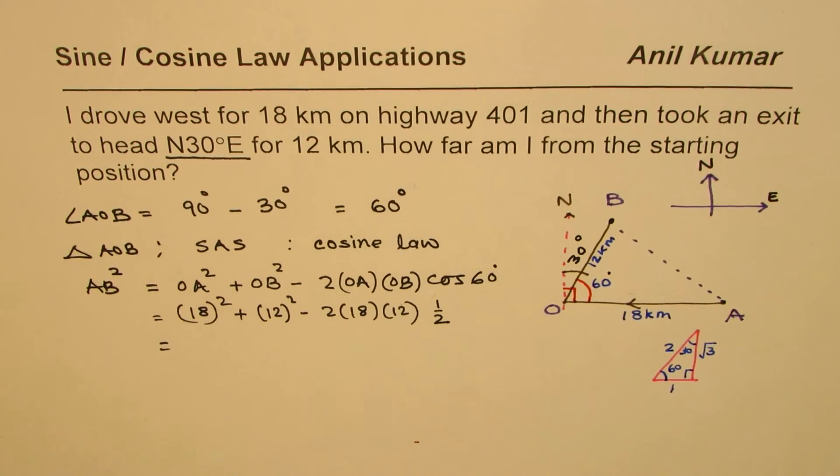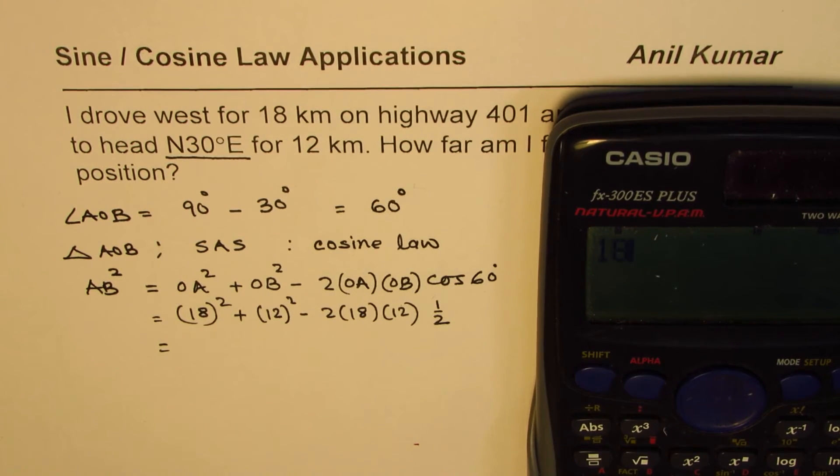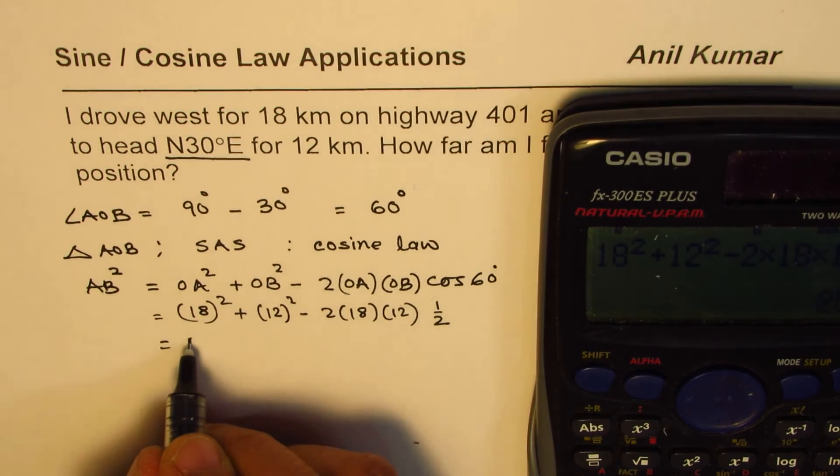Now we can use calculator to find the answer. So it is 18² plus 12² minus 2 times 18 times 12 times, when you're using calculator why not punch in cos 60 itself. So instead of half I punched in cos of 60.